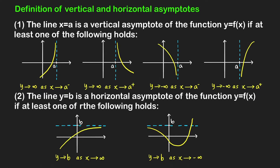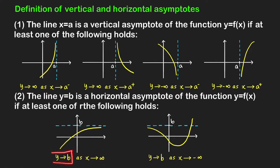For horizontal asymptotes, we say that the horizontal line y equals b is a horizontal asymptote of the function y equals f of x if at least one of the following is true. As x goes to infinity, as we move further to the right, the function values or y coordinates are getting closer and closer to b. Or as x approaches negative infinity, as we move further to the left, the y values are getting closer and closer to b.